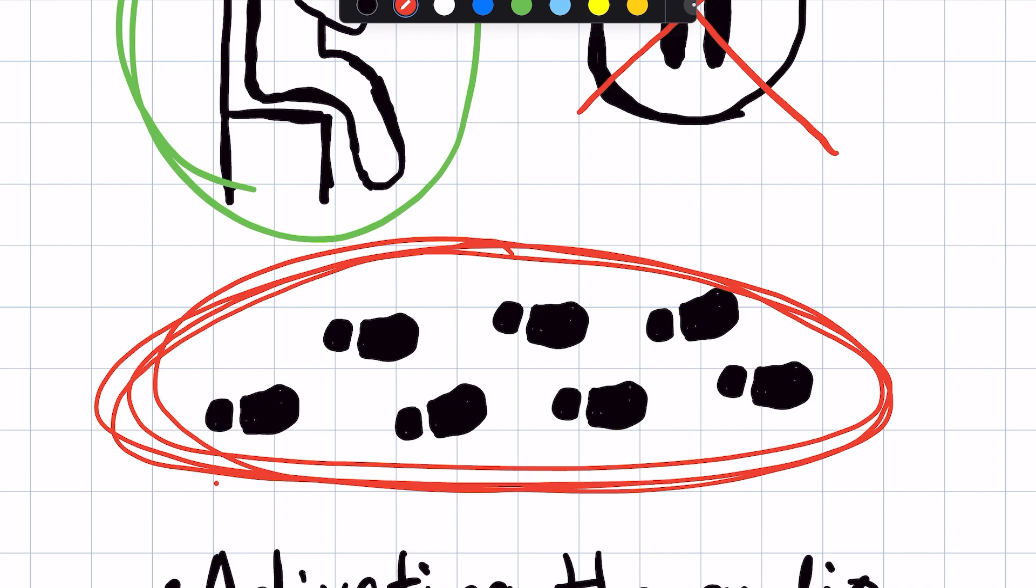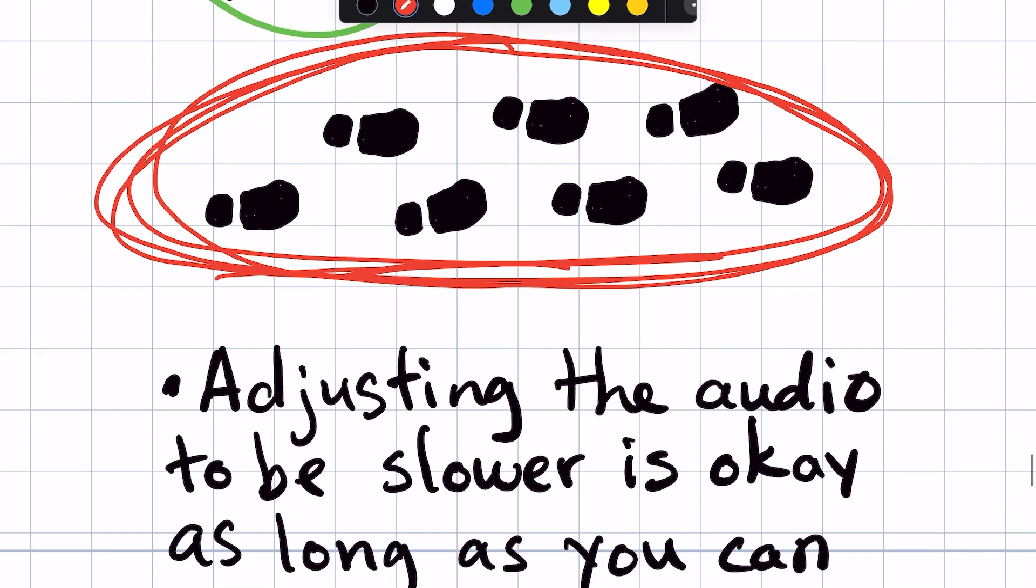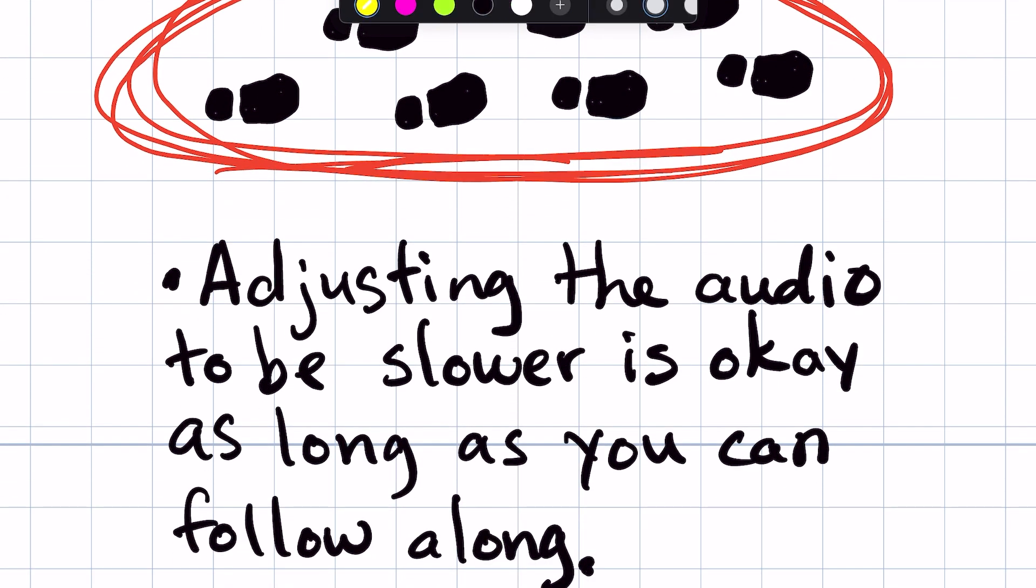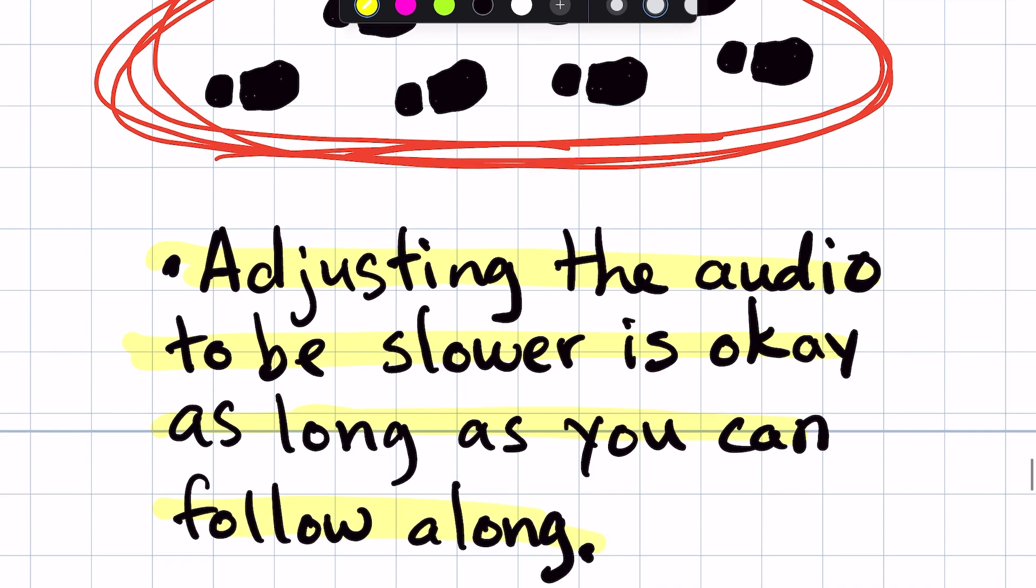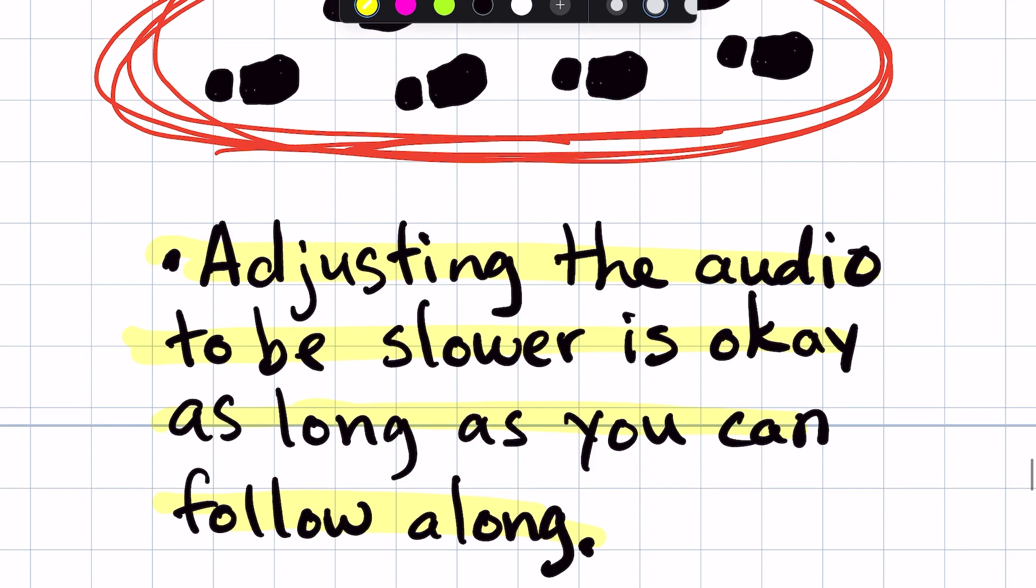Now, some people don't feel comfortable walking and shadowing, but he stood by this tip to help him get better at shadowing. So if you think you might want to try walking, then give it a try while you do this as well. Also, another tip is if you can adjust the audio to be slower, it's okay as long as you can follow along. You don't want it to be too slow and you don't want it to be too fast. So you need to find the rhythm that works for you.